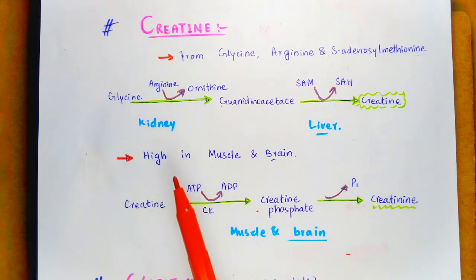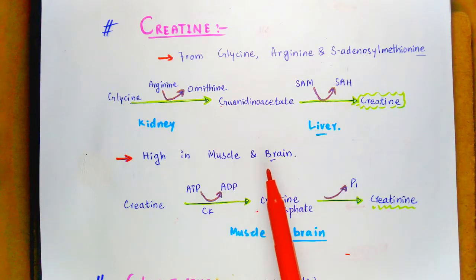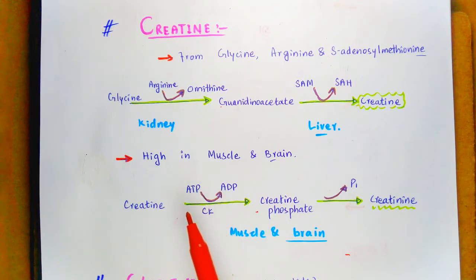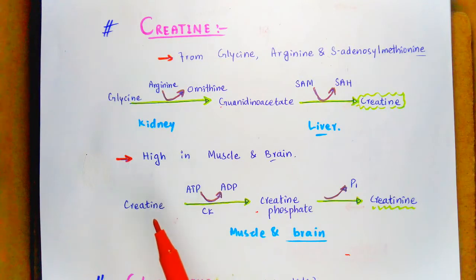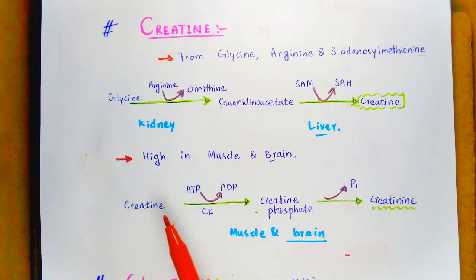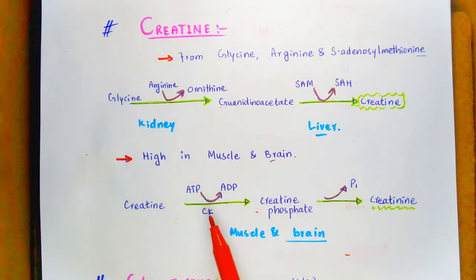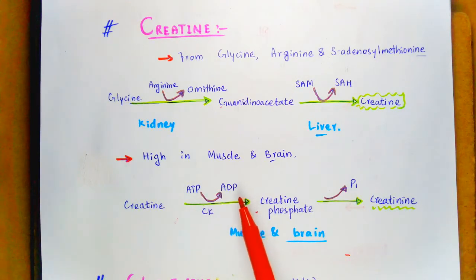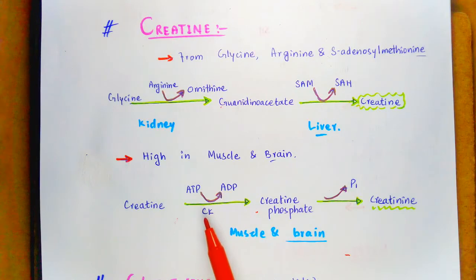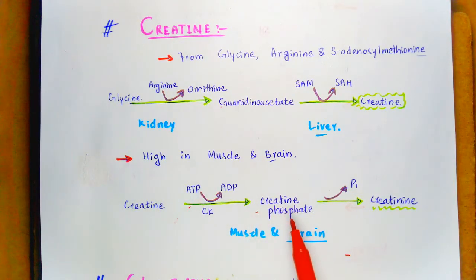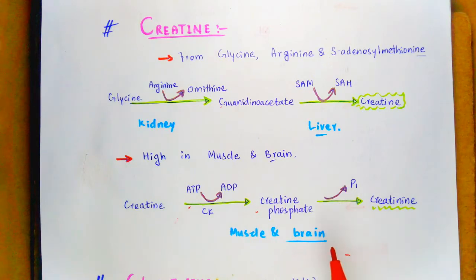A large amount of creatine is present in muscle and brain cells in the form of creatine phosphate. Creatine phosphate is formed when ATP phosphorylates creatine to form creatine phosphate. This reaction is catalyzed by the creatine kinase enzyme. Here, ATP is converted into ADP and creatine kinase catalyzes this reaction to form creatine phosphate.